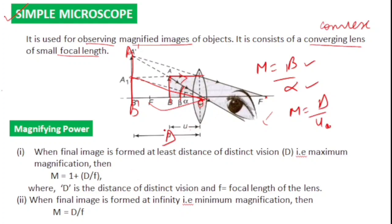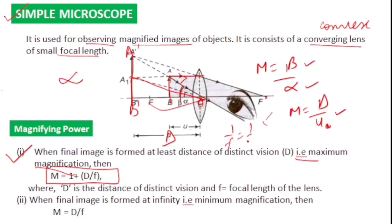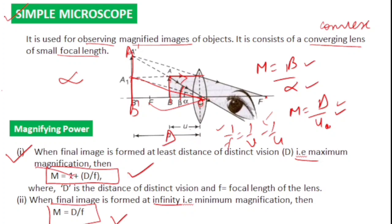For the simple microscope, there are two cases. Maximum magnification is when the image is formed at D (least distance of distinct vision): m = 1 + D/f. Minimum magnification is when the image is formed at infinity: m = D/f. You must remember both these formulas.